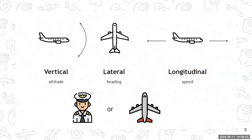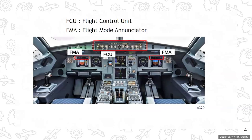There are two possibilities to select this target: either the pilots can choose the targets by controlling the interfaces, or the pilot can ask the aircraft to select the target by itself. In both cases, the pilot has to engage a mode to ask the aircraft to follow this target. A mode corresponds to a specific behavior of the aircraft. There are a lot of interfaces in the cockpit to engage those modes, but in this presentation I will focus on the FCU.